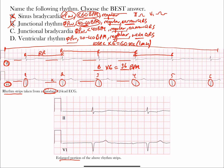Looking at the QRS complexes, from beginning to end they are less than 120 milliseconds — these are narrow QRS complexes. That's the key differentiator: narrow QRS rules out ventricular rhythm, which requires wide QRS complexes. So despite the rate of 36 bpm falling in the ventricular rhythm range and the rhythm being regular, this is not a ventricular rhythm.